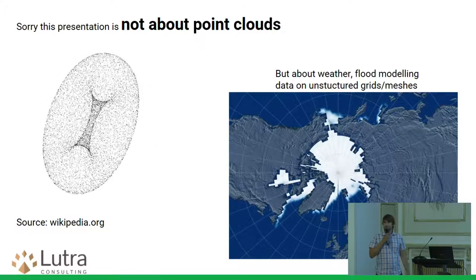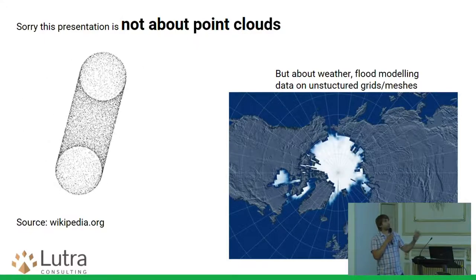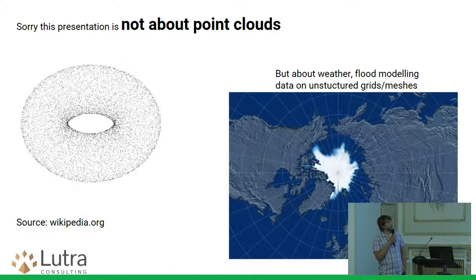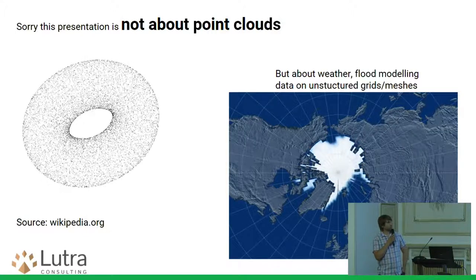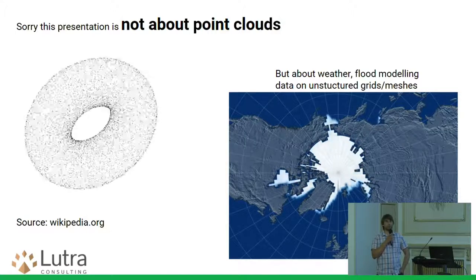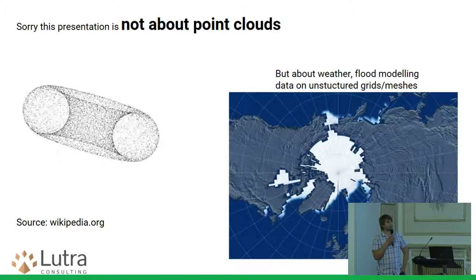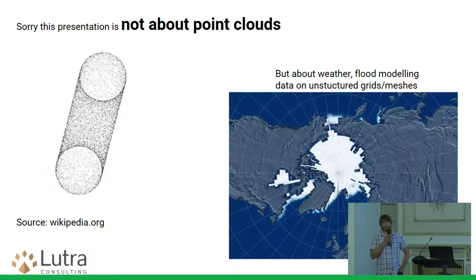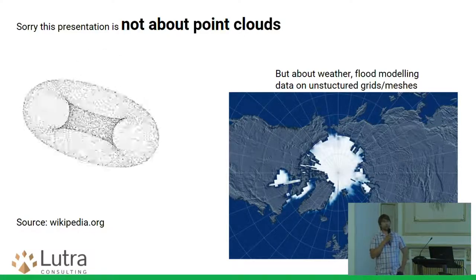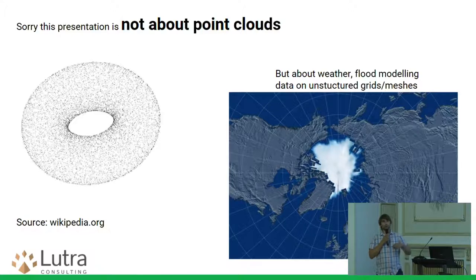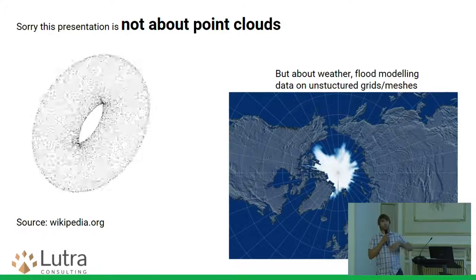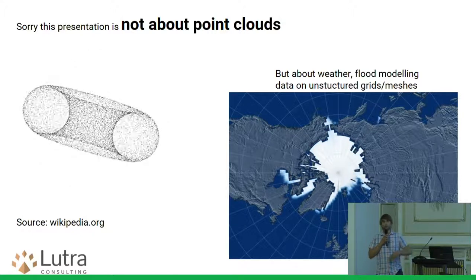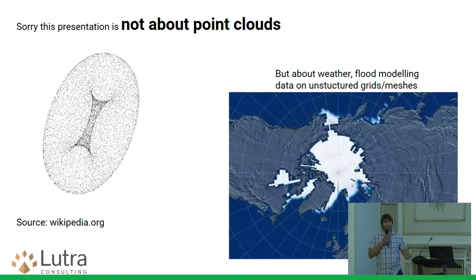First, this is not about point clouds — there is a lot of confusion in terminology. This is more about weather data and flood modeling. The difference is that we expect much less data overall. We expect that your mesh is small enough to be loaded into memory, but on each cell or point you have many many data values — for example, temperature every few hours for a week or month — but you don't have that many cells.